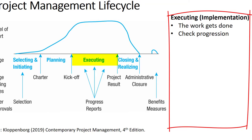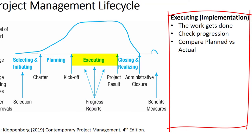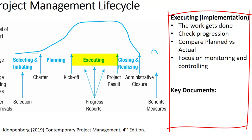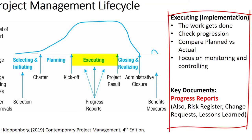Within execution, the project manager is checking planned versus actual work performed and providing progress reports to certain stakeholders such as a client. The process of monitoring and controlling performance is a major part of this phase. The key documents are progress reports. However, other documents are also used throughout this phase, such as maintaining the risk register, managing requested changes using a change request process, and capturing lessons learned during implementation.